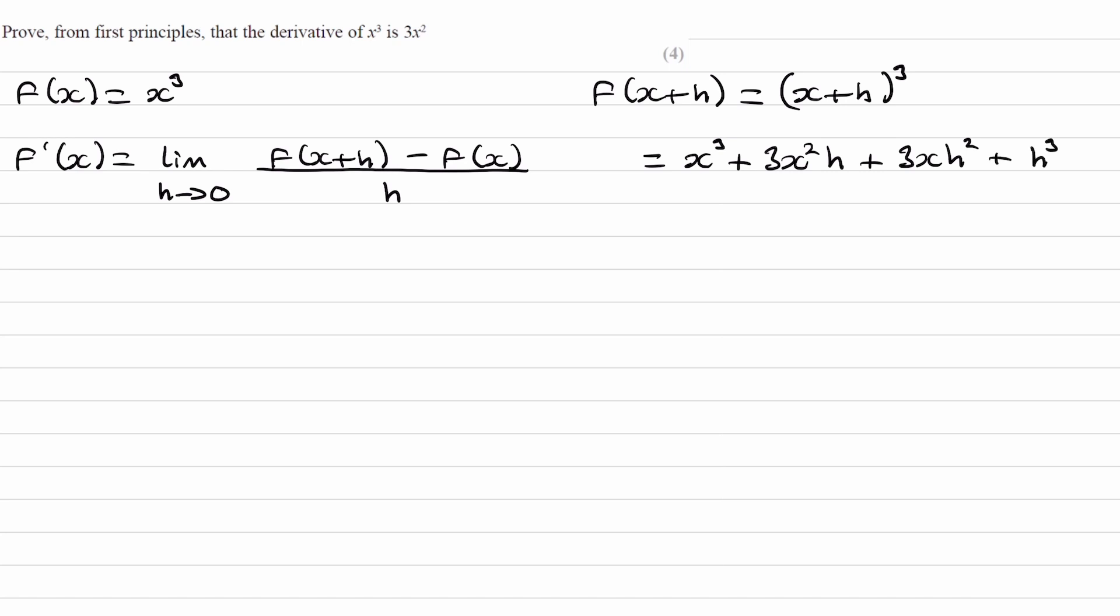Now we can put this into our equation. f of x plus h was x cubed plus 3x squared h plus 3x h squared plus h cubed. And then we take away f of x, which is x cubed. Divide the whole thing by h.